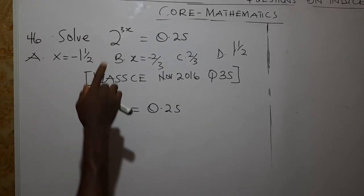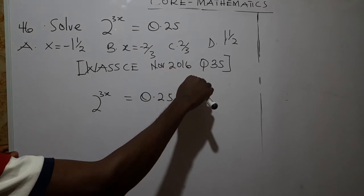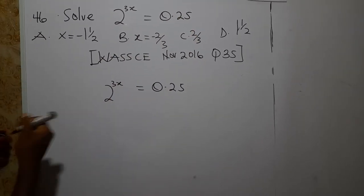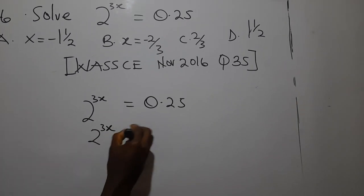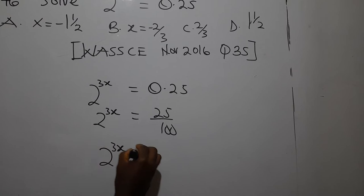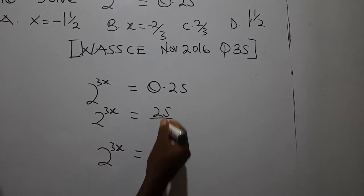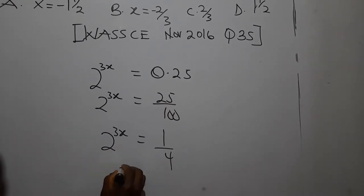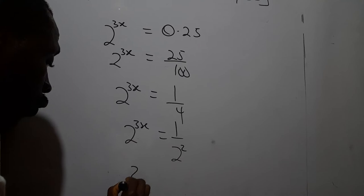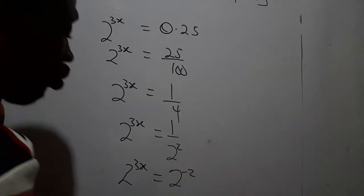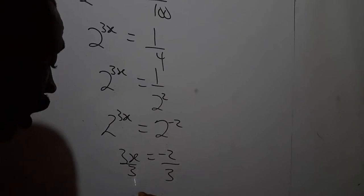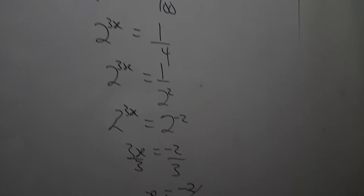WASSCE November 2016, objective question number 35: 3·2^(3x) = 0.25. We write 0.25 = 1/4 = 1/2^2, so 2^(3x) = 2^(-2). Equating exponents: 3x = -2, so x = -2/3. The correct answer is B.